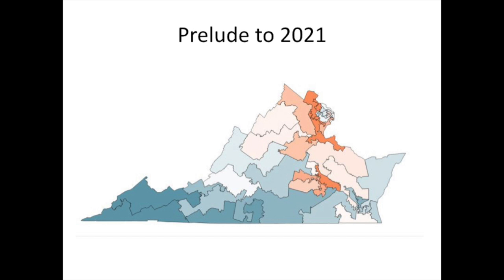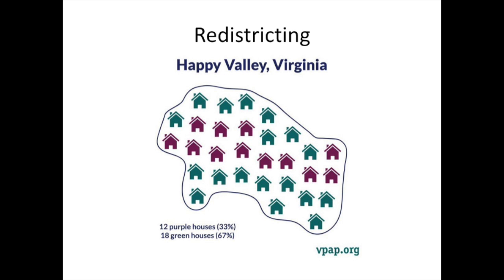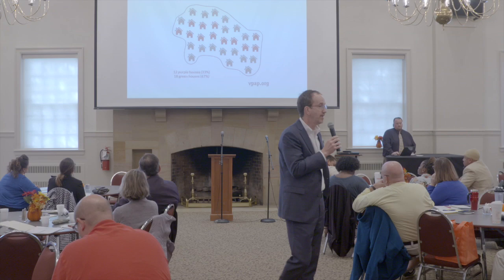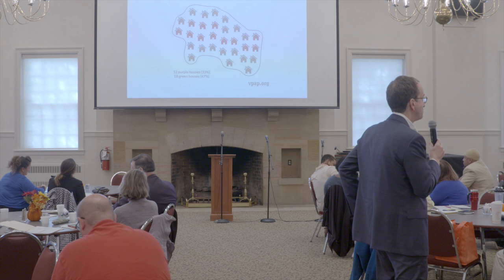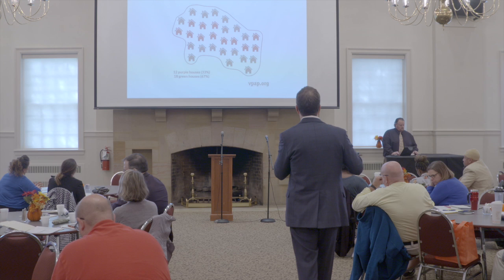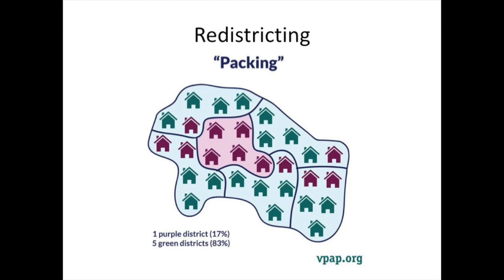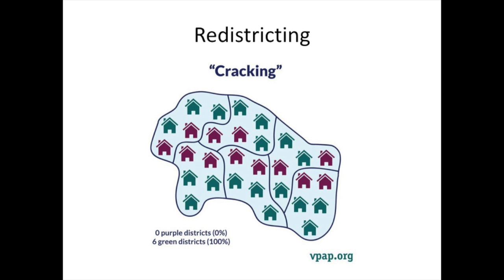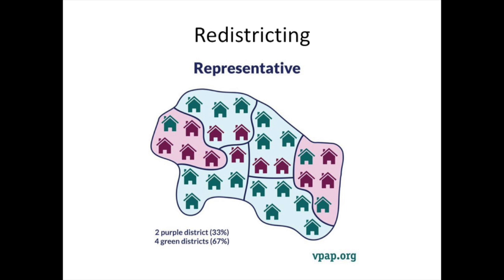Then we have some exercises on how to explain how redistricting works. Ours is called Happy Valley, where two-thirds of the houses are green and one-third are purple. You can assign your students: 'Draw some lines — if you're the purple team, how can you rig this to your best effect?' You could pack all the purple people into one district, give them no representation, spread everybody out so it's all green, or find something more representative with the same two-thirds ratio. People understand you want to win — and that's kind of the point of redistricting: whoever is drawing the lines usually has the power.